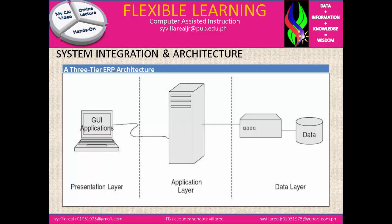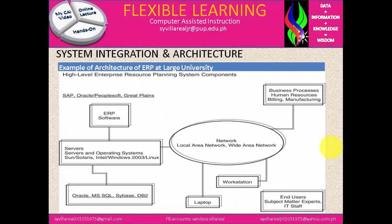You will notice the figure of a three-tier ERP architecture. From the presentation layer, we have the GUI application, the application layer which is the server, and the data layer which contains the backups. As an example of architecture of ERP at a large university, it identifies the same processes of ERP such as SAP, Oracle, and Microsoft, connected through the network.